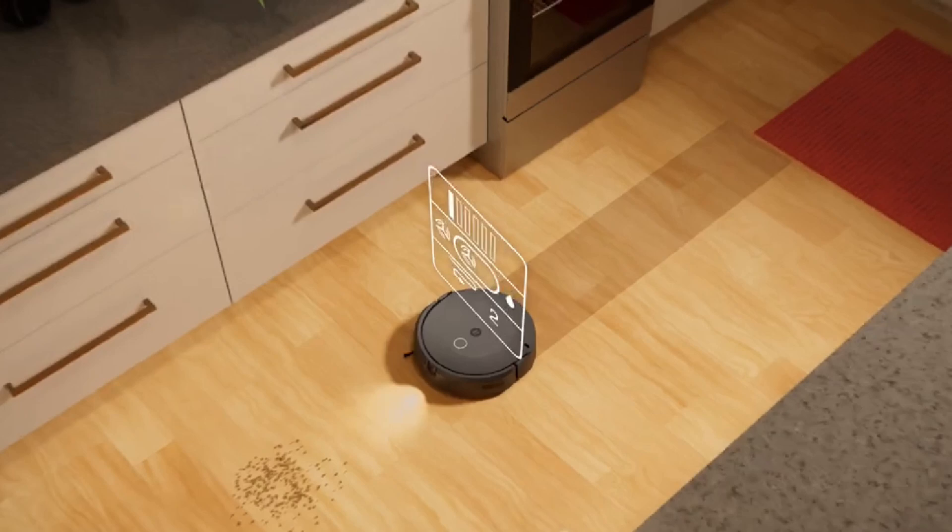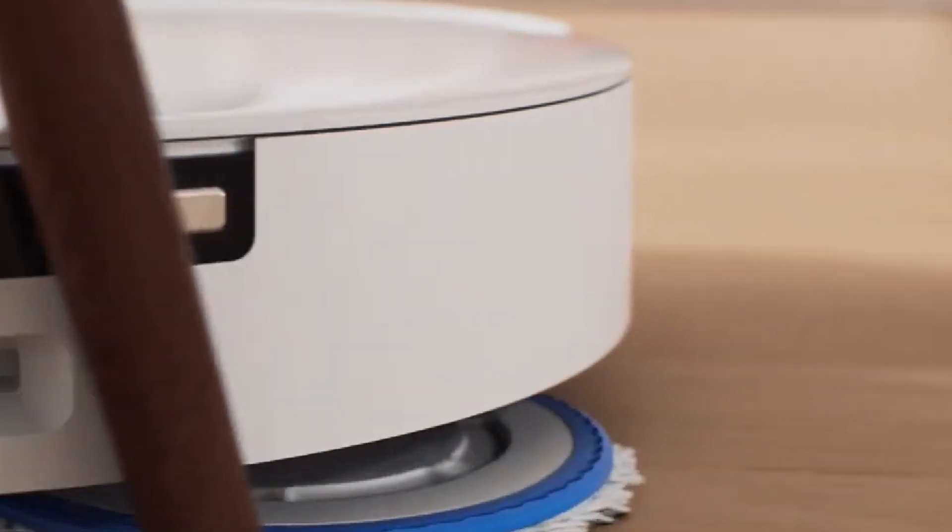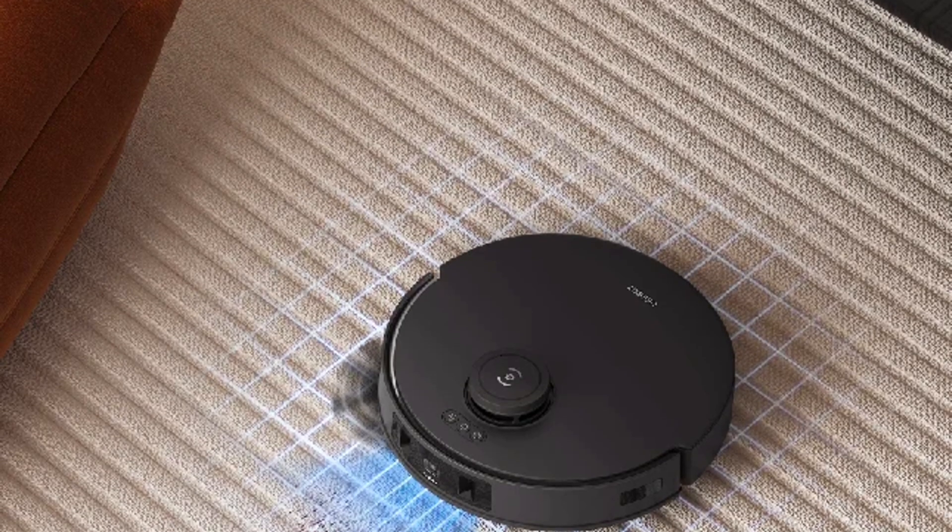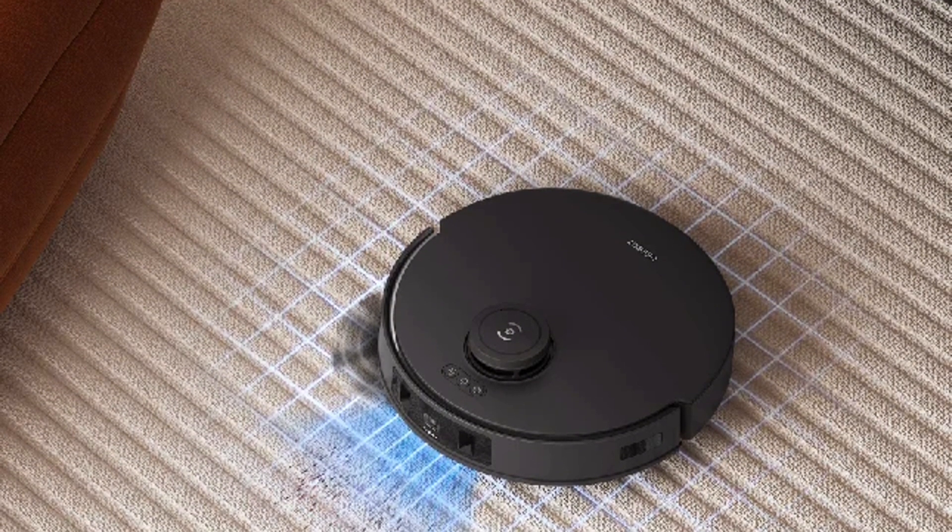In contrast, the D-Bot T30 also has strong suction capabilities, but may not match the Roomba 10's performance on larger debris types, particularly on carpets.